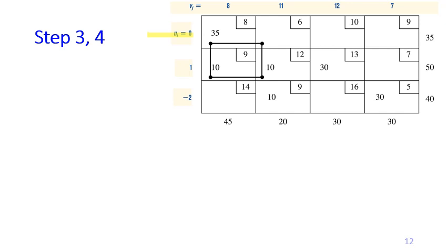Then check if for the non-basic variables, is there any of them having the c hat ij positive? In this case, apparently x12 has the cij hat positive. You may want to verify this by yourself by really calculating the numbers to make sure that c hat 12 is positive.